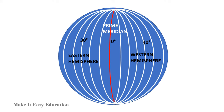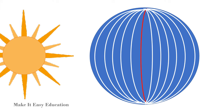The opposite side from the prime meridian is 180 degrees. Longitude classifies time zones, because the part of the earth facing the sun will have daytime, whereas the part of the earth facing away from the sun will have nighttime.